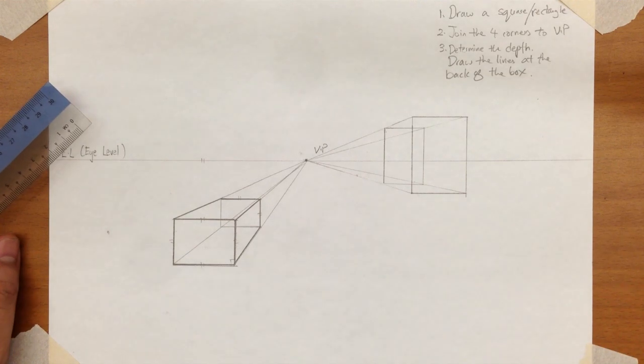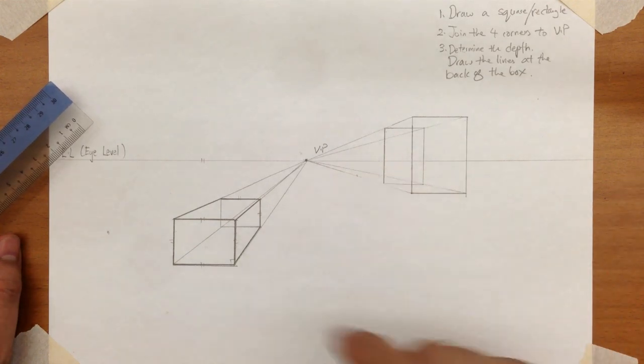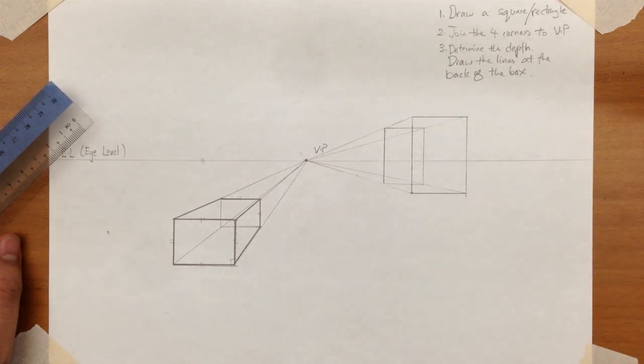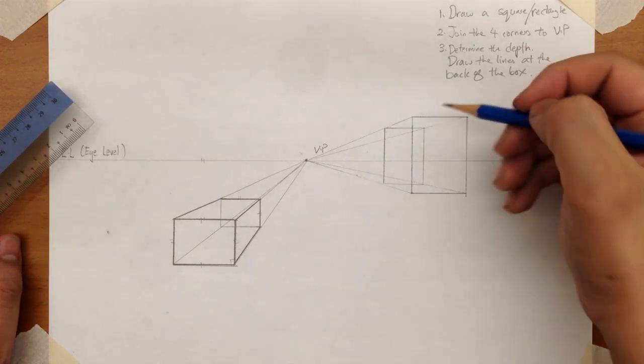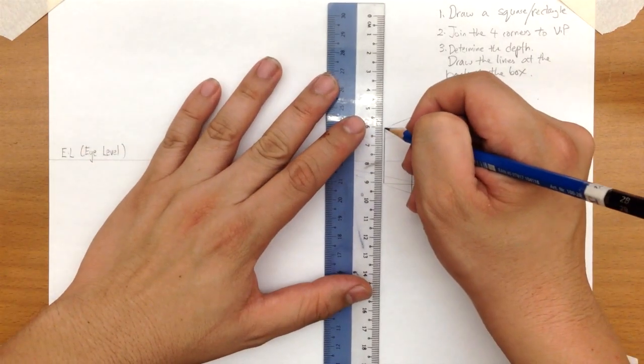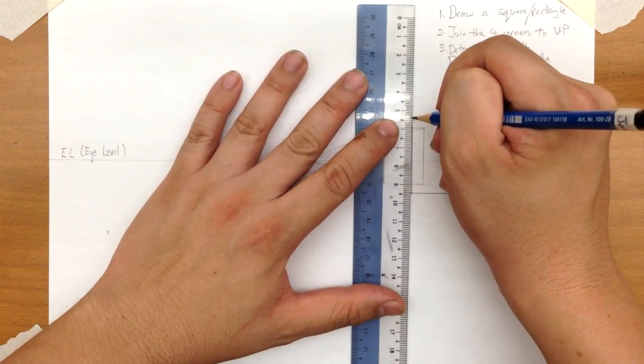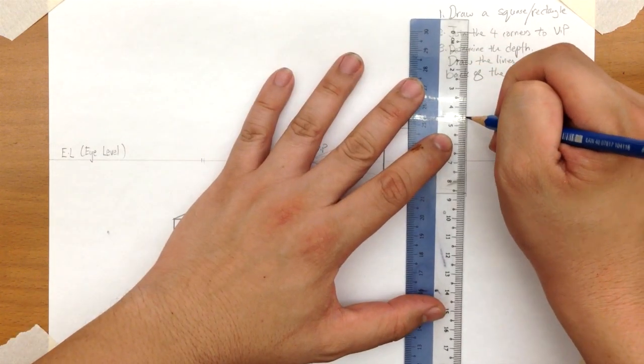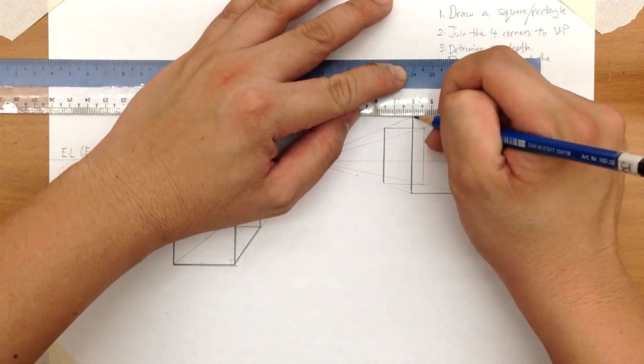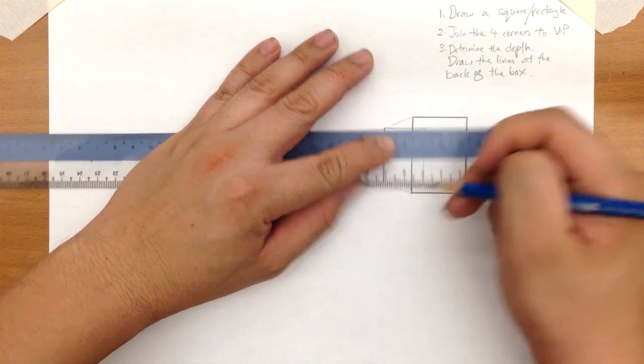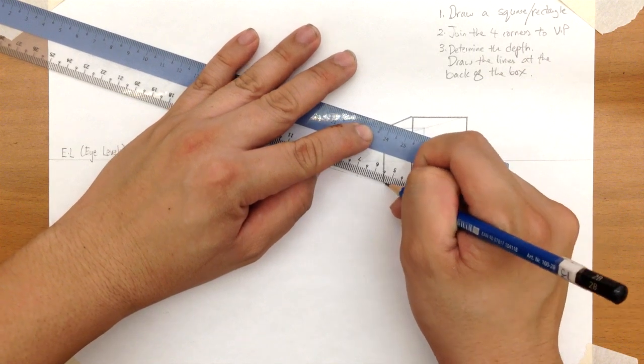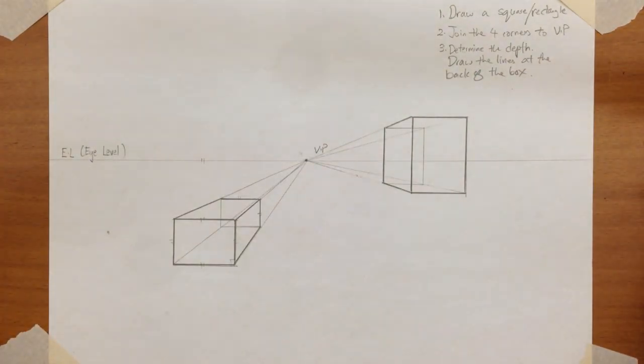So why is it that you only see the front and the side? Remember this box is at the eye level. That means the box is right in front of your eyes. It's not above or below. Therefore, you can't see the top. And you can't see the bottom. Okay. So again go ahead and darken the lines that you want. Okay. So this is your box on the eye level.